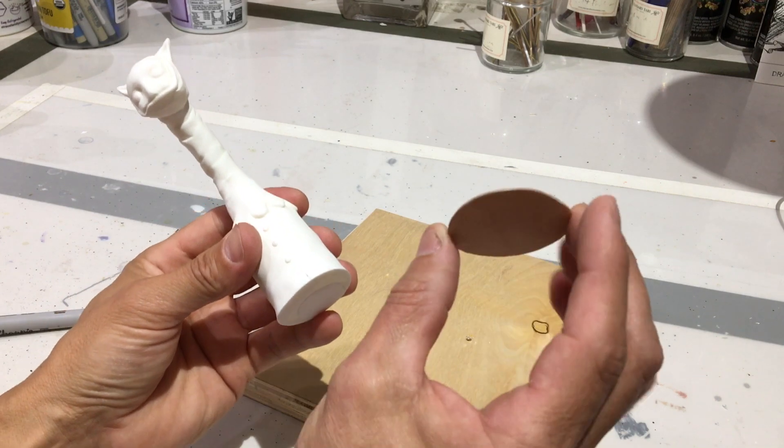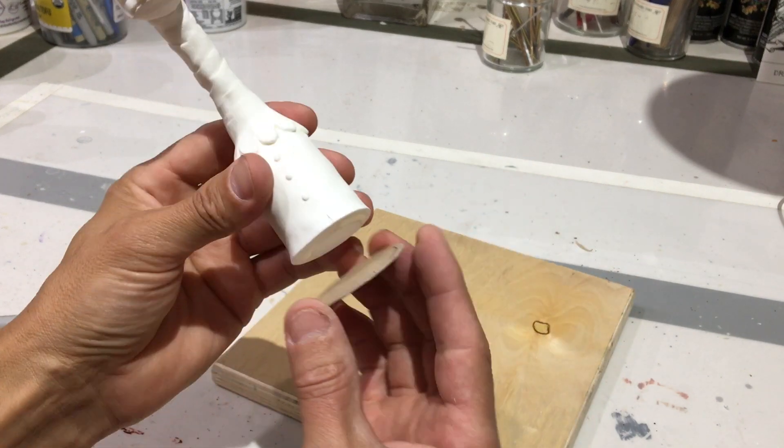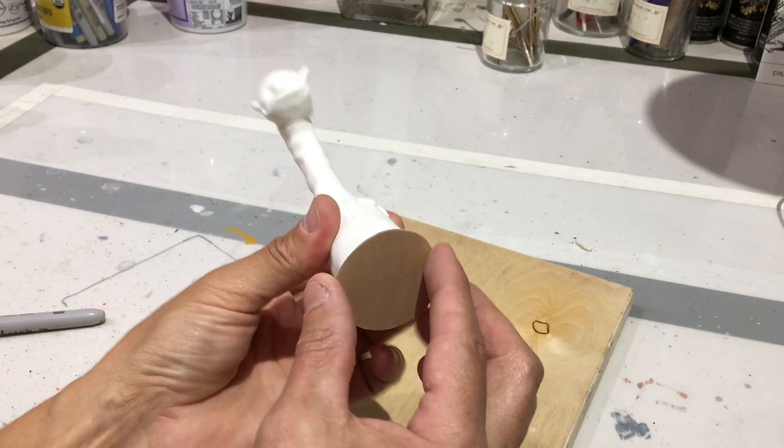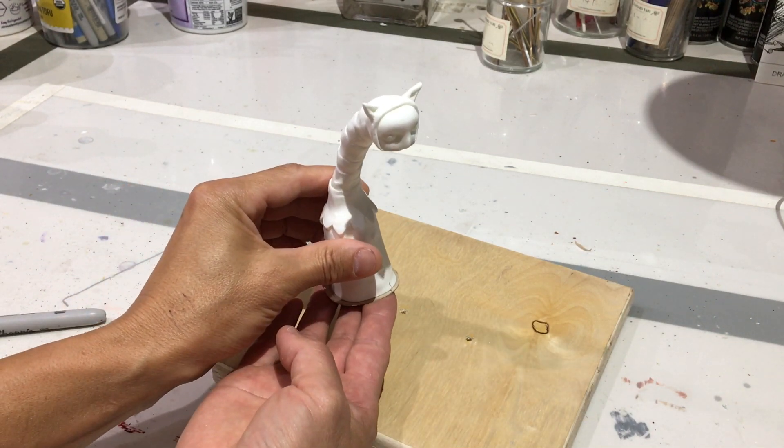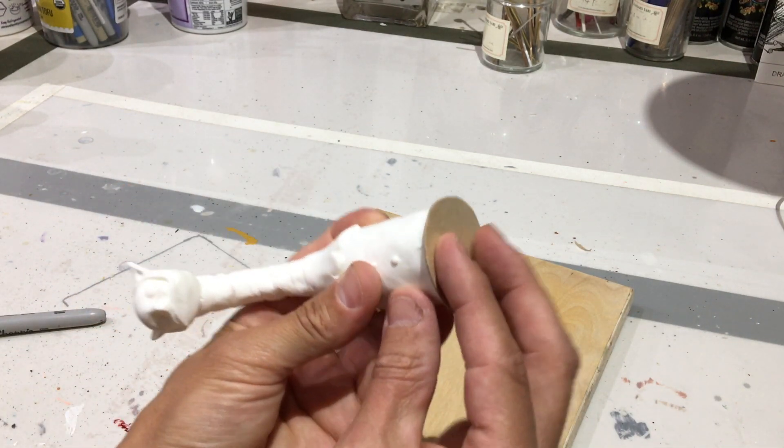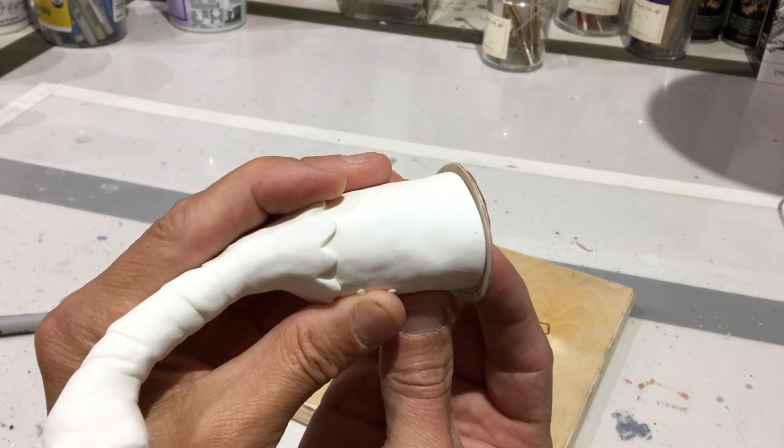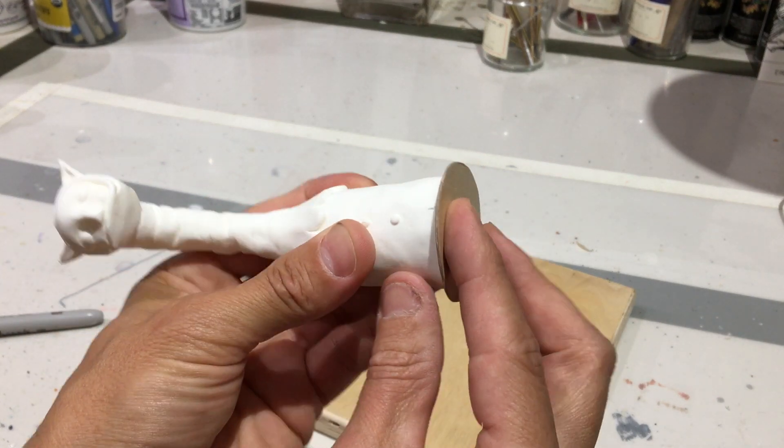The first thing is to attach this super thin little piece of wood to the bottom of the piece. So this little piece of wood will be sandwiched between the piece and the board. And I'll explain the purpose of this later when I get to the casting and finishing part.